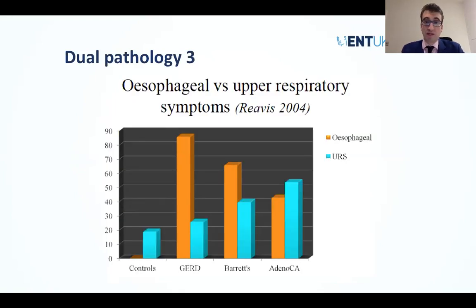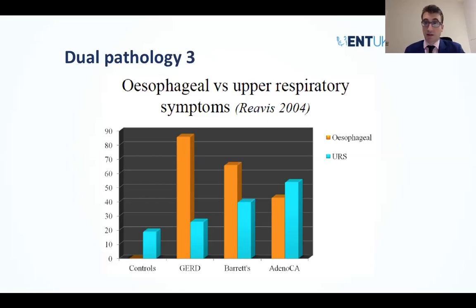Comparing esophageal with upper respiratory symptoms: for gastroesophageal reflux and Barrett's esophagus, esophageal symptoms predominate, as expected. However, when it comes to adenocarcinoma — which usually presents in the distal third of the esophagus — interestingly, upper respiratory symptoms are the more common initial presenting complaints. This is critical to stress, because many people may not realize this, and that may result in missing an early diagnosis of esophageal cancer.